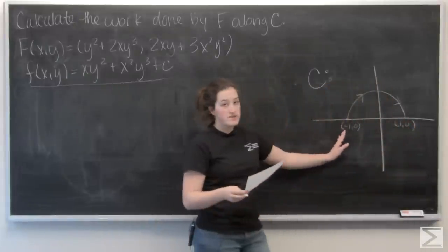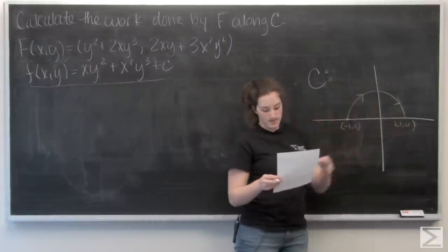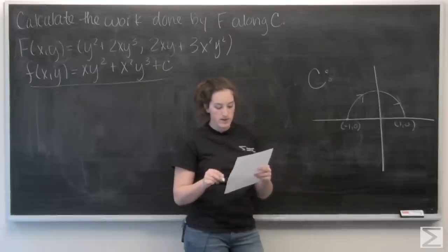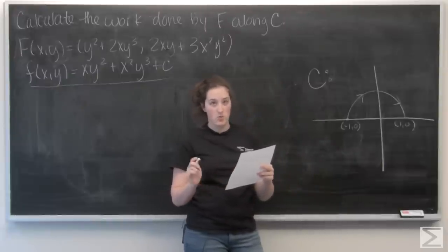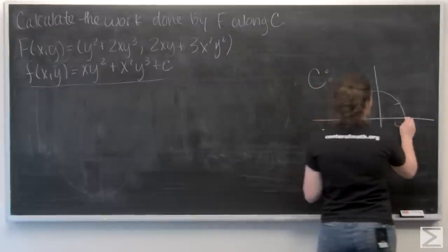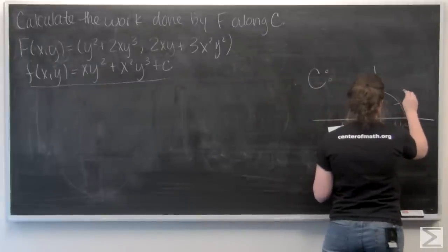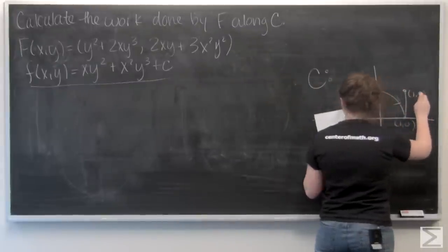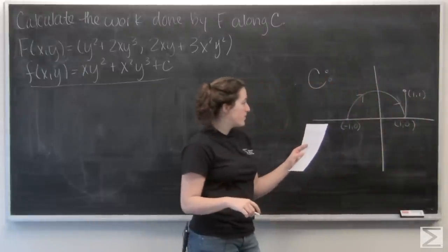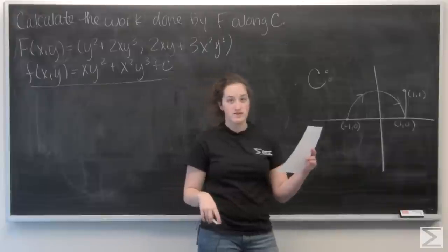So I'm going from negative 1, 0 around to 1, 0. Okay, followed by the line segment from 1, 0 to 1, 1. Followed by this line segment from 1, 1 to negative 1, 0.